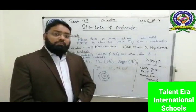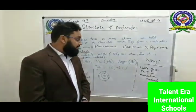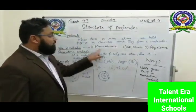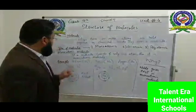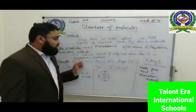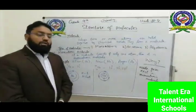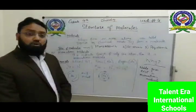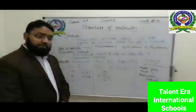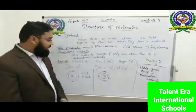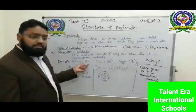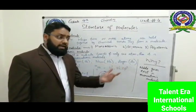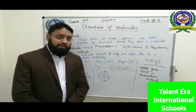First, I want to explain monoatomic molecules. If a molecule consists of only one atom, then it is a monoatomic molecule. For example, helium gas, neon gas, and the elements of Group 8A of the periodic table.